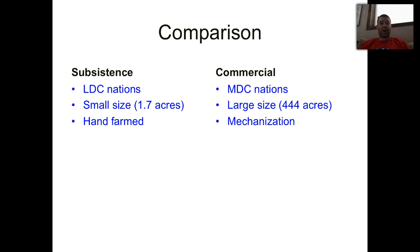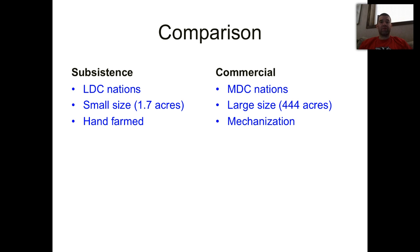Subsistence farms are very small generally — about 1.7 acres compared to almost 500 acres in commercial agricultural countries. Subsistence farming is more labor intensive, sometimes using beasts of burden or animals, while in commercial agriculture we see far more mechanization — the use of machinery, equipment, tractors, etc.